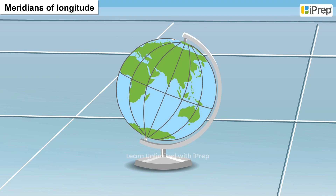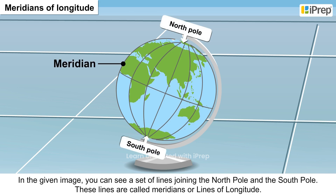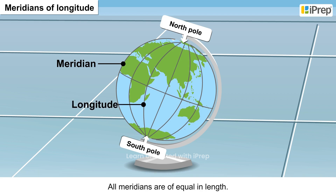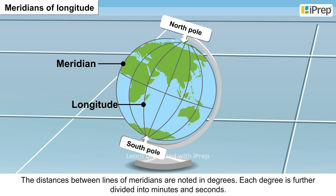Meridians of Longitude: In the given image, you can see a set of lines joining the North Pole and the South Pole. These lines are called meridians or lines of longitude. All meridians are equal in length. The distances between lines of meridians are noted in degrees, and each degree is further divided into minutes and seconds.